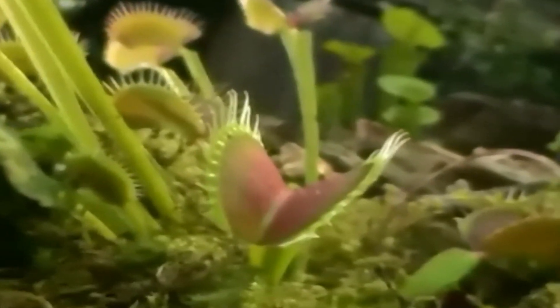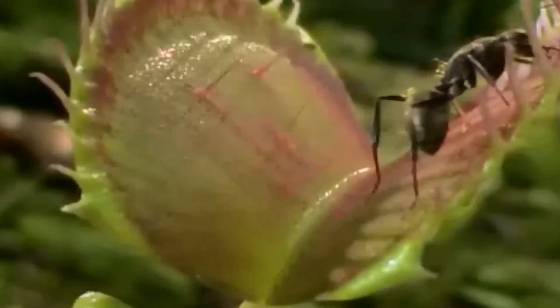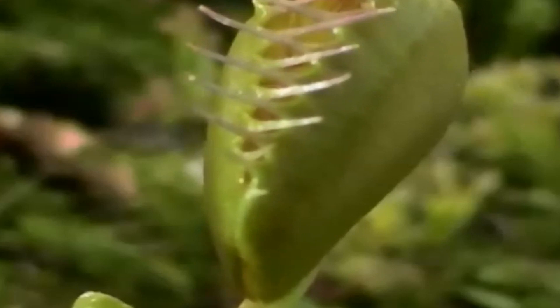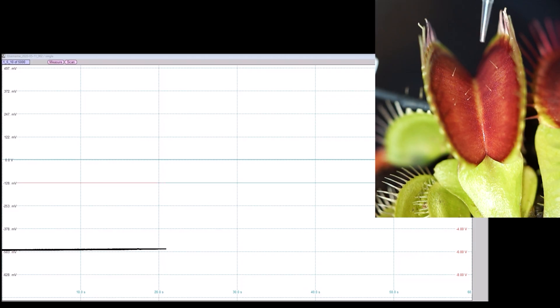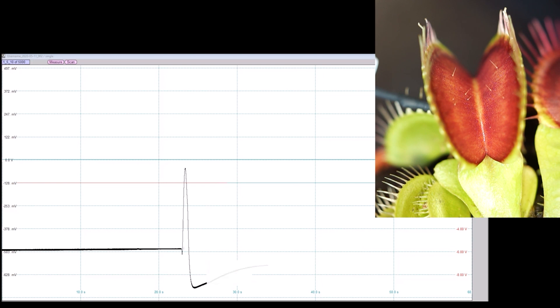The ion channel basis of the action potential, however, remained unknown. To decipher the number of ion transporter entities constituting the flytrap electrical impulse, we inspected the action potential at higher time resolution and identified six different phases lasting about two seconds.